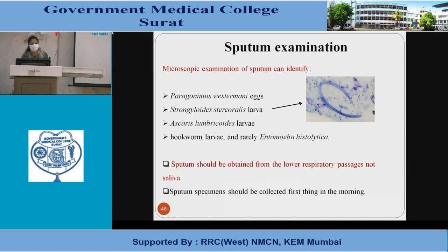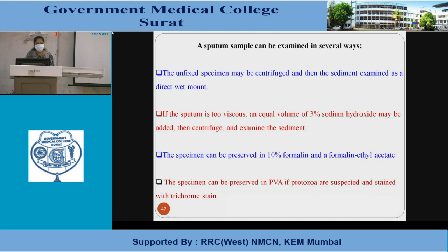Sputum examination: microscopic examination of sputum can identify Paragonimus westermani eggs, Strongyloides stercoralis larvae, Ascaris lumbricoides larvae, hookworm larvae, and Entamoeba histolytica. Sputum should be obtained from the lower respiratory passages, not saliva, and collected first thing in the morning. The unfixed specimen may be centrifuged and the sediment examined by direct wet mount. If sputum is too viscous, an equal volume of 3% sodium hydroxide may be added. The specimen can also be preserved in 10% formalin or formalin-ethyl acetate, or in PVA if protozoa are suspected and stained with trichrome.